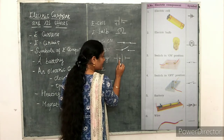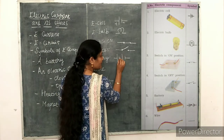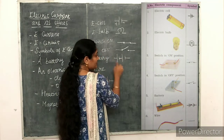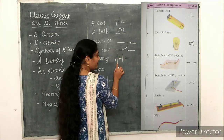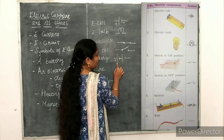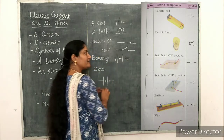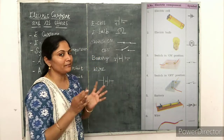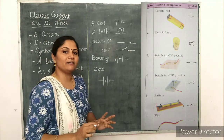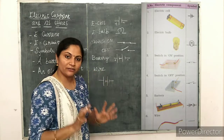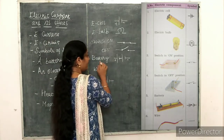The negative terminal of the first cell should be connected with the positive terminal of the second cell. So this is the battery — with the first terminal positive and the last terminal negative, no matter how many cells are combined. Whether there are 2 cells or 20 cells in the battery, this is the symbol of battery.